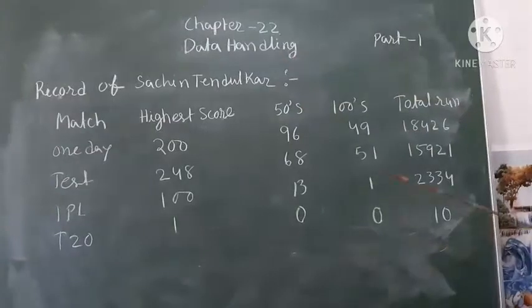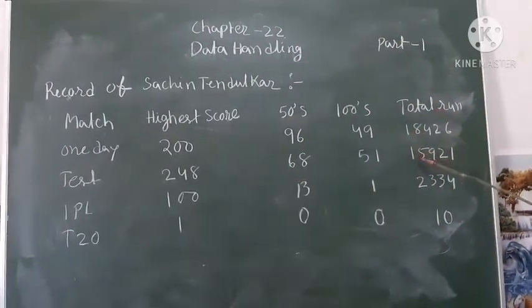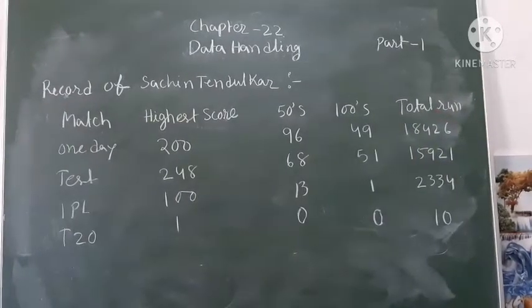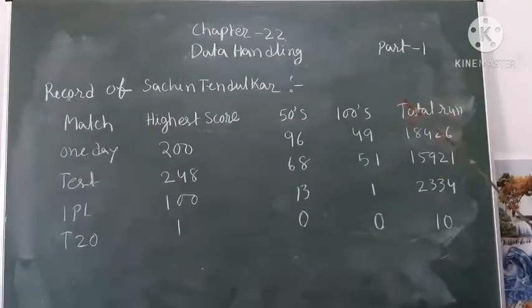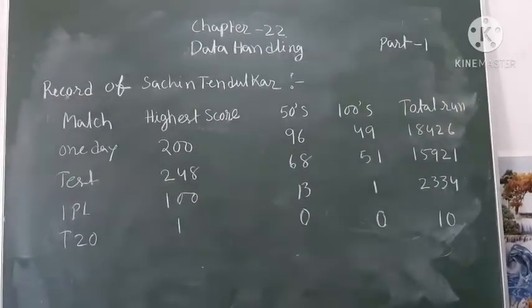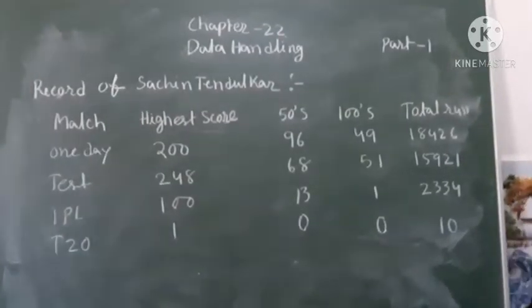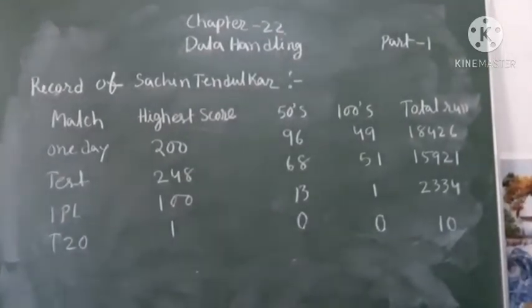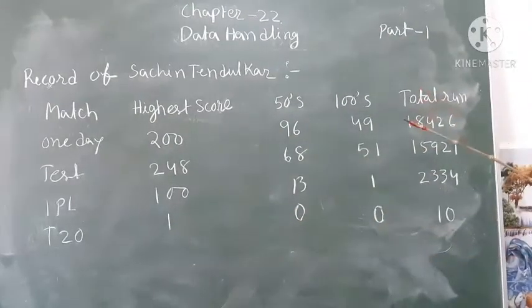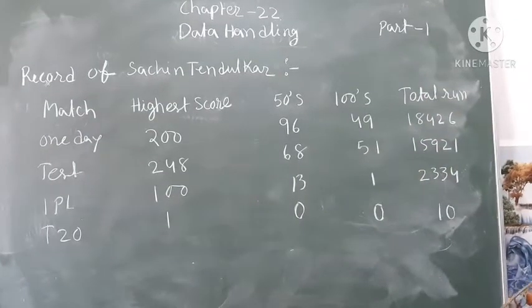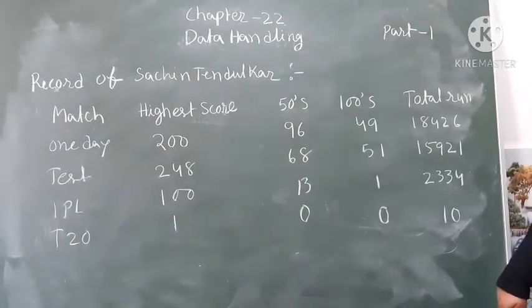That means this is the total raw data score. Likewise, in data analysis, it can help you to understand the runs scored by Sachin in all formats of matches. Like a batsman, a bowler's record is also maintained in the form of such figures. Such statistical information plays a vital role in life.